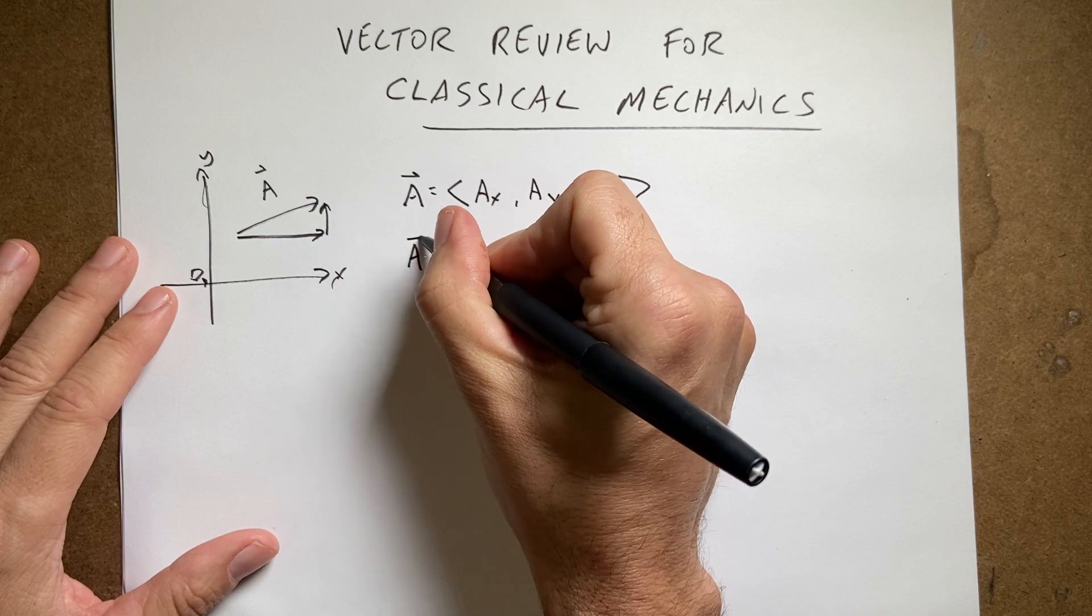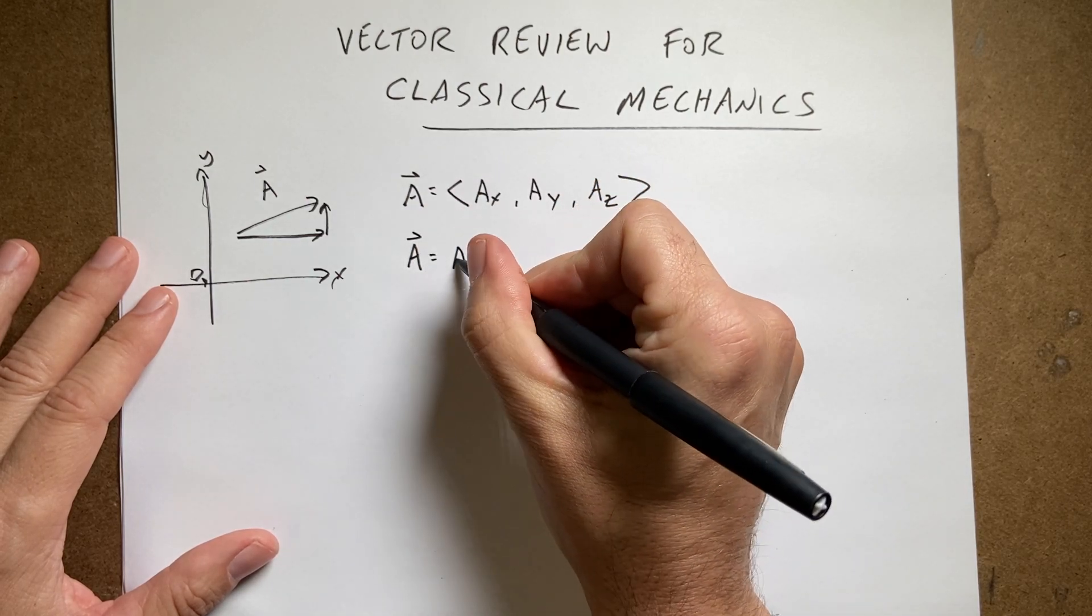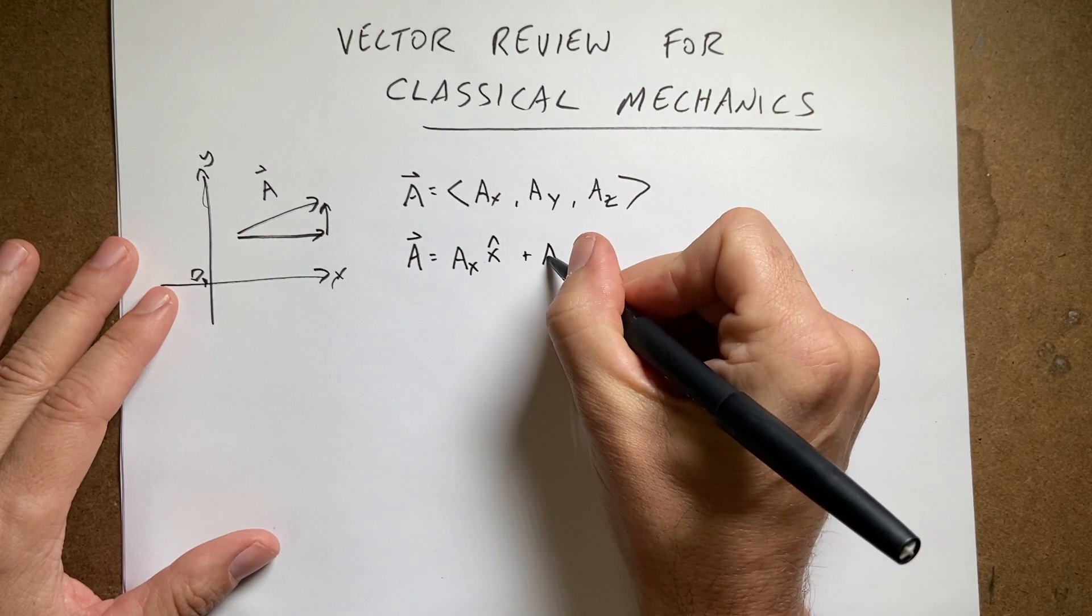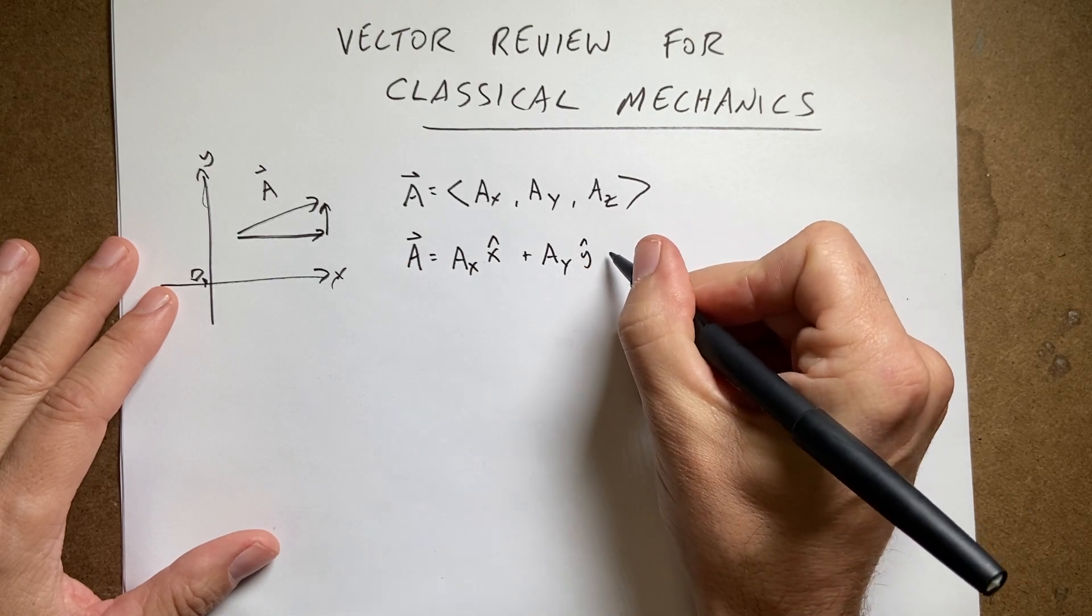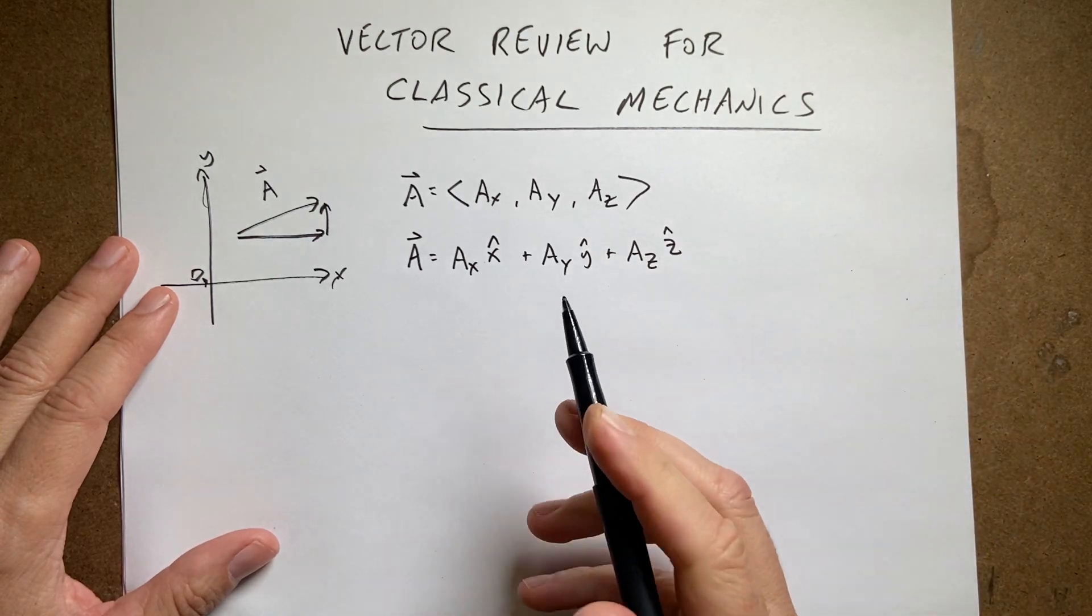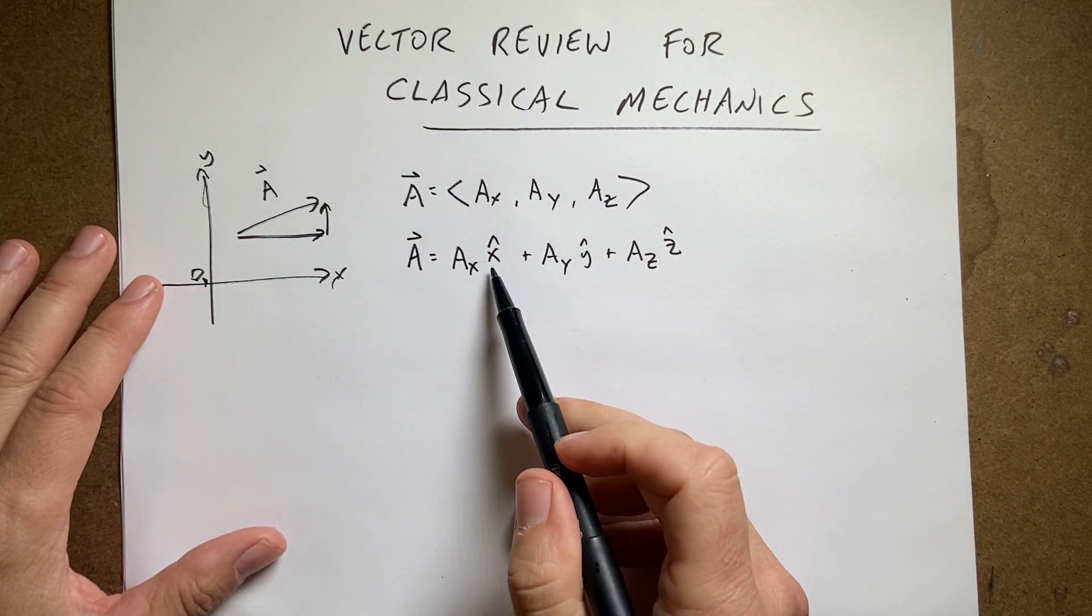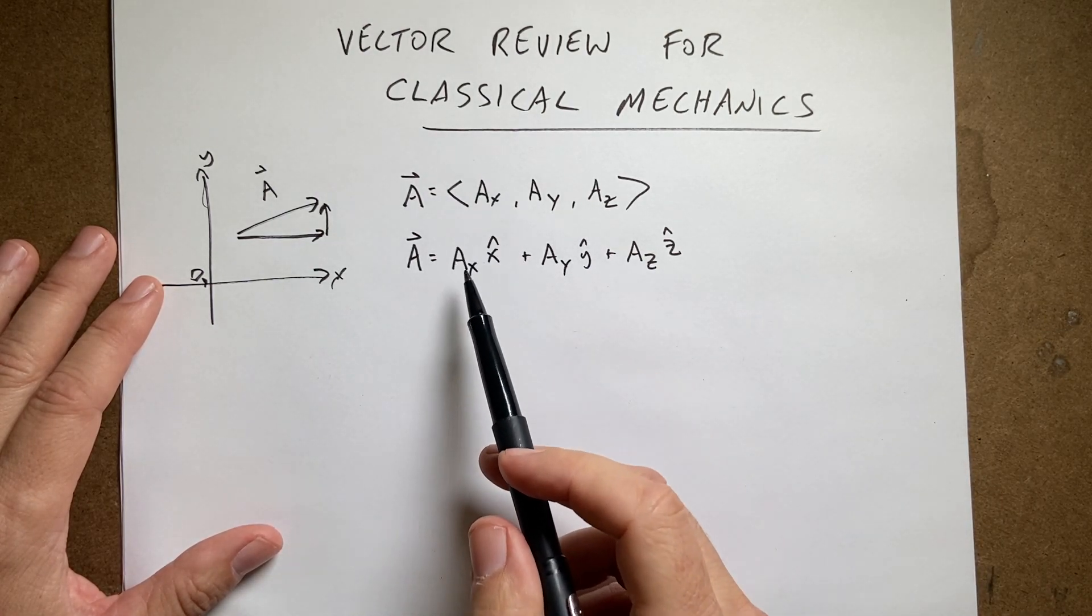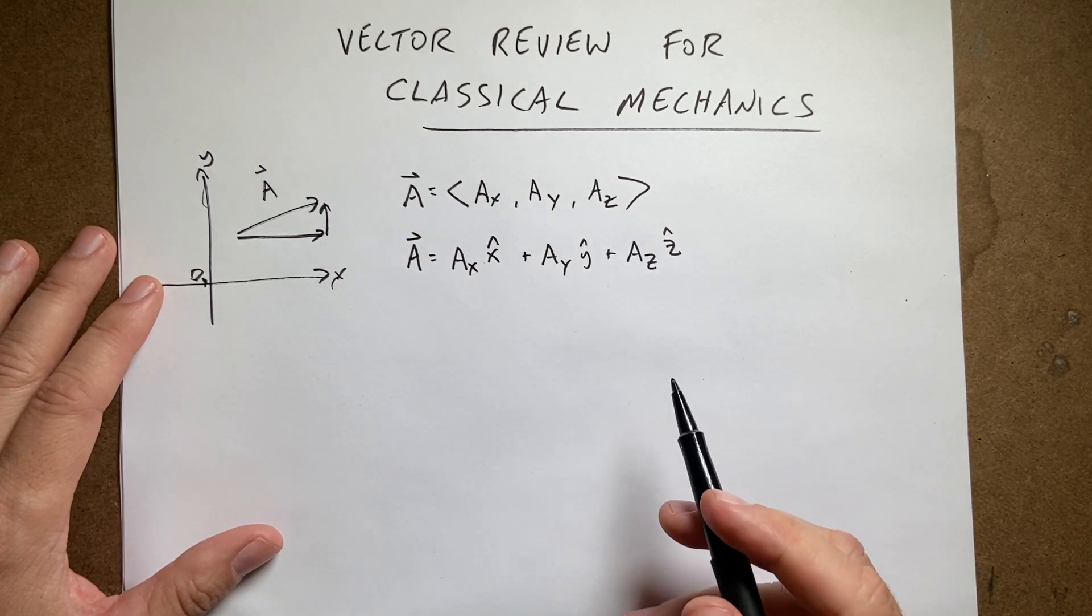You could also write it this way. This is a very common way, and I'm cool with this. a.x x hat plus a.y y hat plus a.z z hat. So this is really nice because it uses these unit vectors, x, y, and z, which I'll talk about in a second. But again, it has the same information. These a.x, a.y, and a.z's are the same.